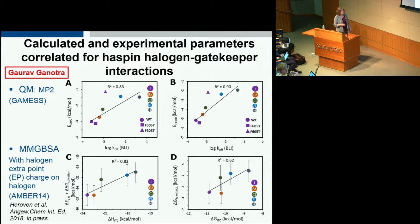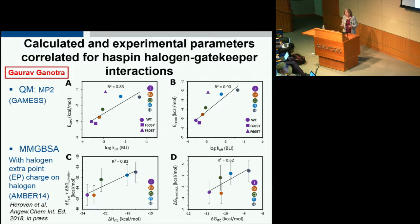This study gave us, in principle, a fairly simple rule: if you want to increase residence time, think about adding halogen-pi interactions. It also showed us, from the computational perspective, the issues we can have trying to deal with these sorts of interactions with classical force fields.